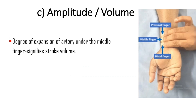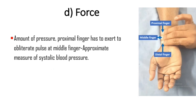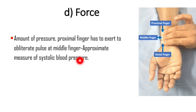The third character is amplitude or volume of the pulse. It is nothing but the degree of expansion of the artery under the middle finger, and it signifies stroke volume. The next character is force — the amount of pressure the proximal finger has to exert to obliterate the pulse at the middle finger. It is an approximate measure of systolic pressure.